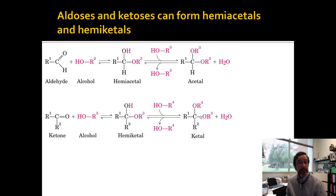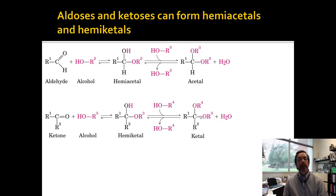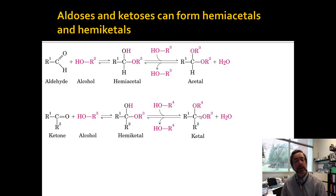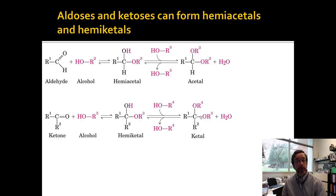Ketones do the same thing — a ketone just has an R group instead of the H. It can bind one alcohol to make a hemiketal, and it can bind two alcohols to make a full ketal. The full acetal and ketal are more stable than the hemiacetal and hemiketal respectively. So you form a less stable hemiacetal, but if you react it again with another alcohol, you make a more stable acetal. This ends up being very important.